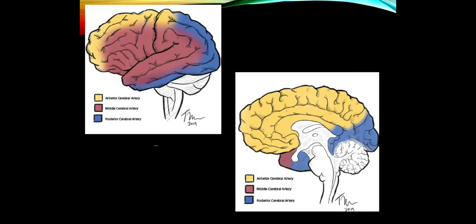Here are the vascular territories we've talked about so far. This drawing illustrates in red the middle cerebral artery, which supplies mainly the lateral hemisphere. The posterior cerebral artery supplies the undersurface of the temporal lobe and the occipital lobe. The anterior cerebral artery supplies the superior frontal gyrus and most of the medial surface of the brain.